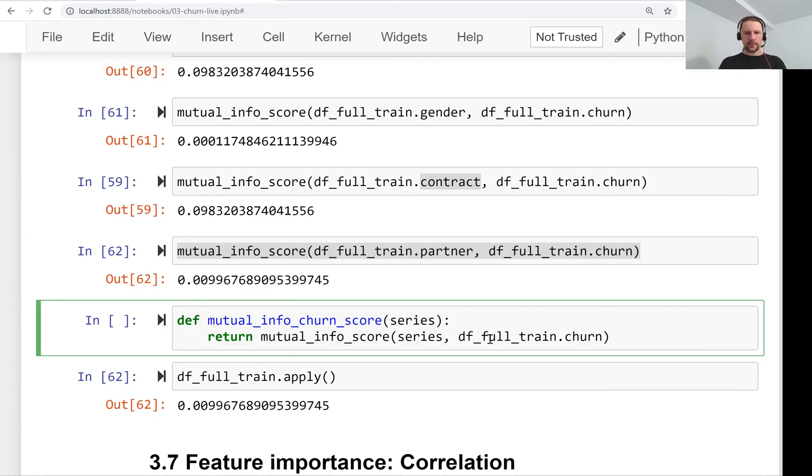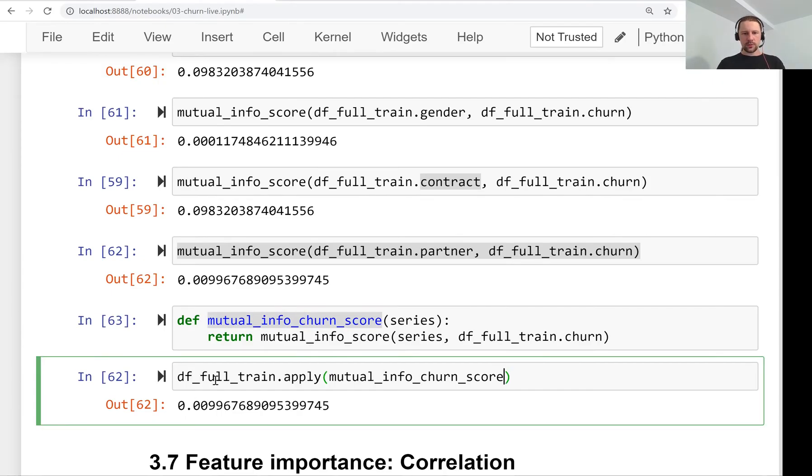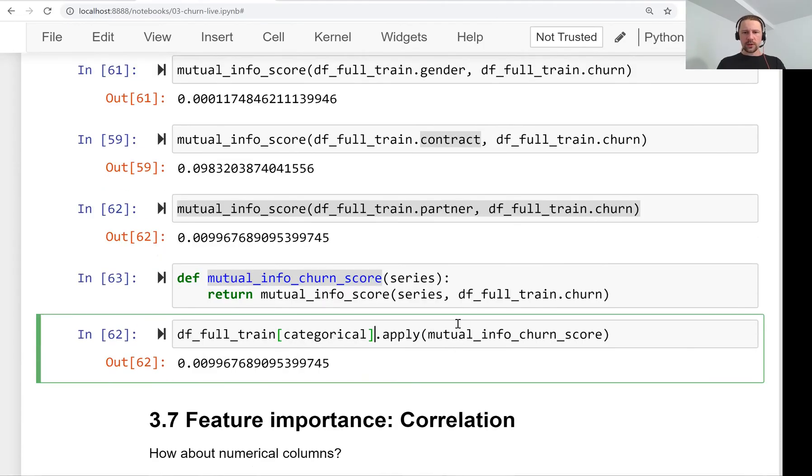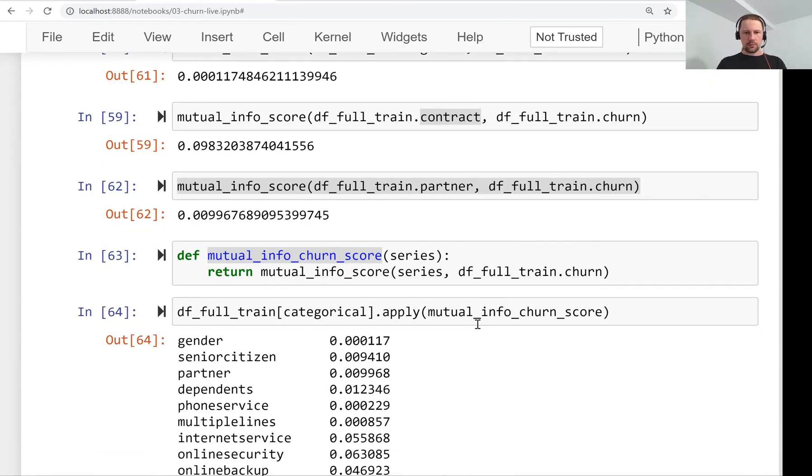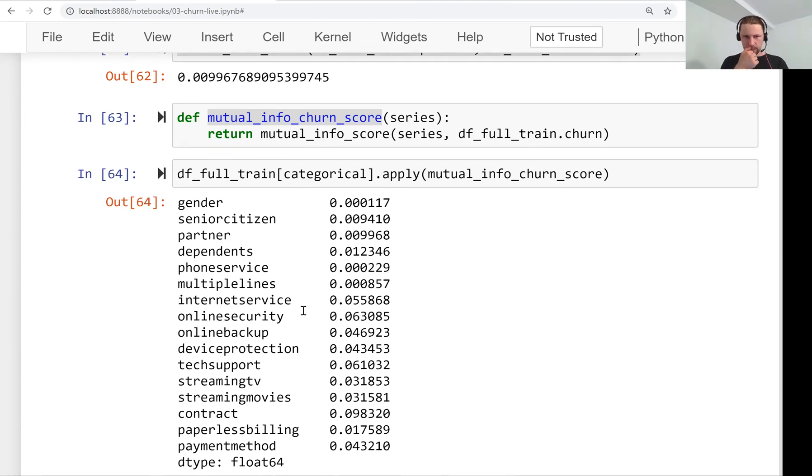So we have this function now that takes only one argument, and we can apply this function to our dataframe. It will apply this function column-wise for each column. We probably actually need to only apply to categorical columns, so we apply this function, and this is what we get. For each column from this list, it applies mutual information score and returns the result.